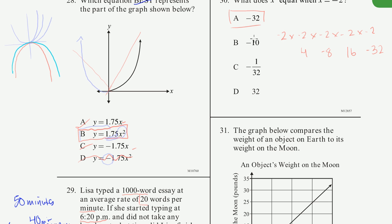If you wanted to do that fast, you'd recognize 2 to the fifth is 32, so it's either +32 or −32. Since we have an odd exponent with a negative base, we're multiplying negative an odd number of times — so the result is negative. With an even exponent you'd get positive; with an odd exponent you get negative.